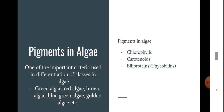Biliproteins are also known as phycobilins. These are the three categories of pigments seen in algae: chlorophylls, carotenoids, and biliproteins. Based on the presence of these pigments, different combinations are present — not all pigments are seen in a single class of algae. These combinations give different colors to the algae, and certain pigments are predominant in certain algae, giving them their particular coloration, like brown algae, red algae, golden algae, blue-green algae, etc.